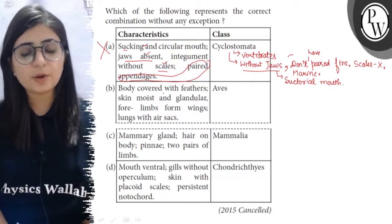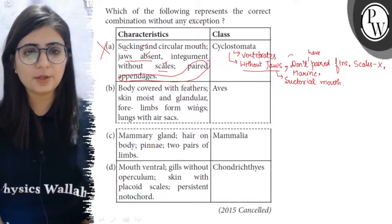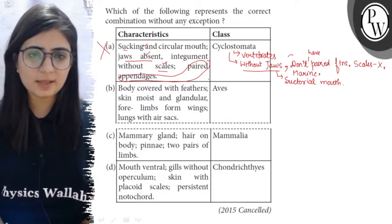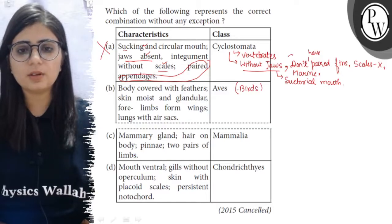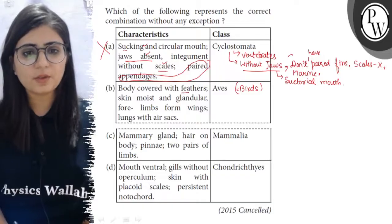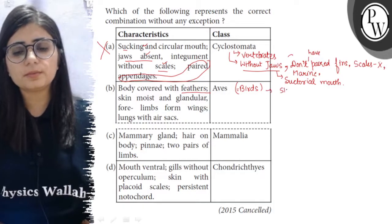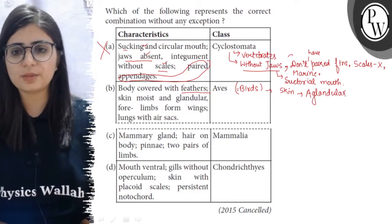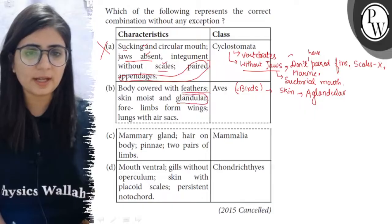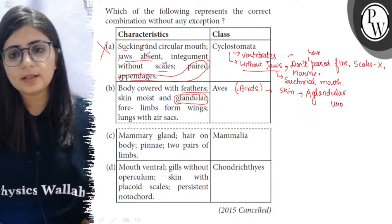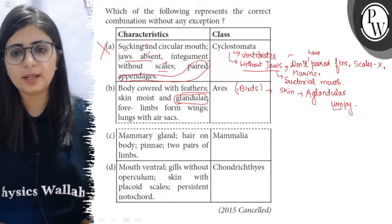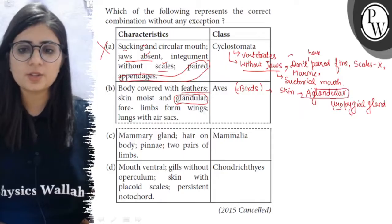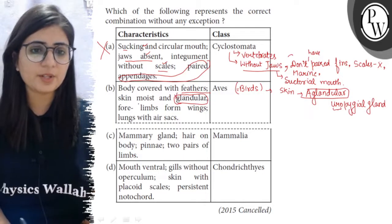The next statement is: body covered with feathers, moist skin and glandular, four limbs form wings, lungs with air sacs — and these are the features of class Aves. In this class come all the birds. The body of birds is covered with feathers. However, the skin of birds is aglandular — meaning no glands are there. No mucus, sweat, or sebaceous glands are present. Their skin is not glandular and moist; only one gland can be there at the tail region — the uropygial gland. So this statement about glandular and moist skin is wrong.